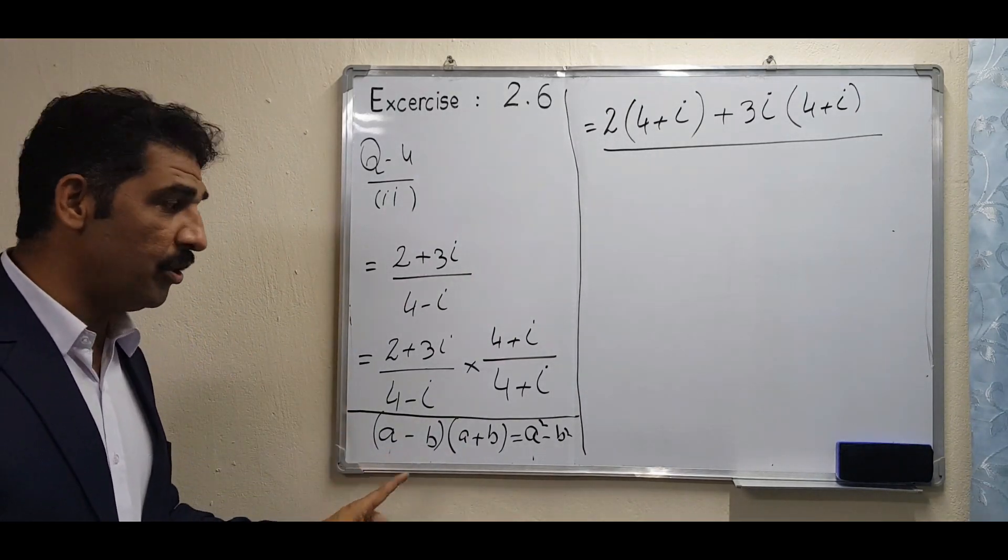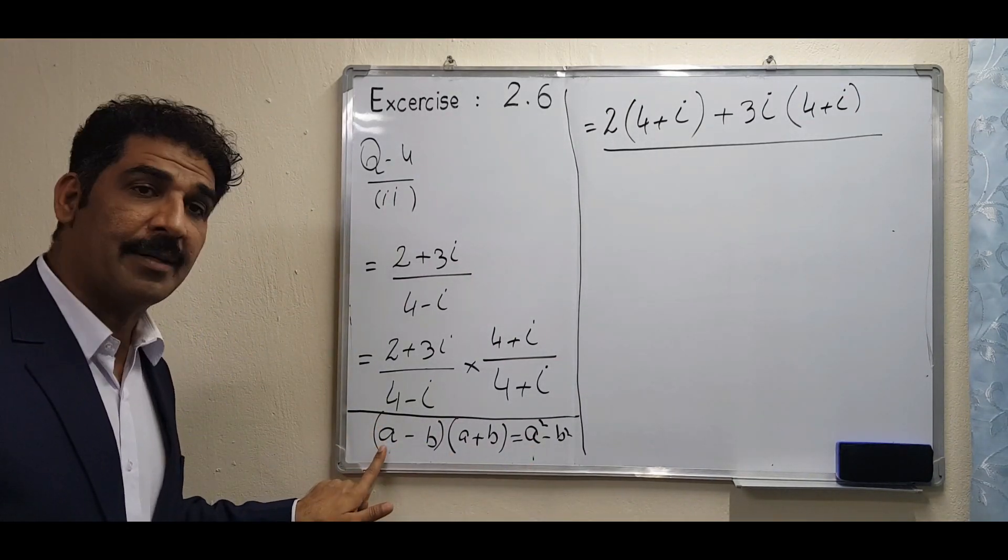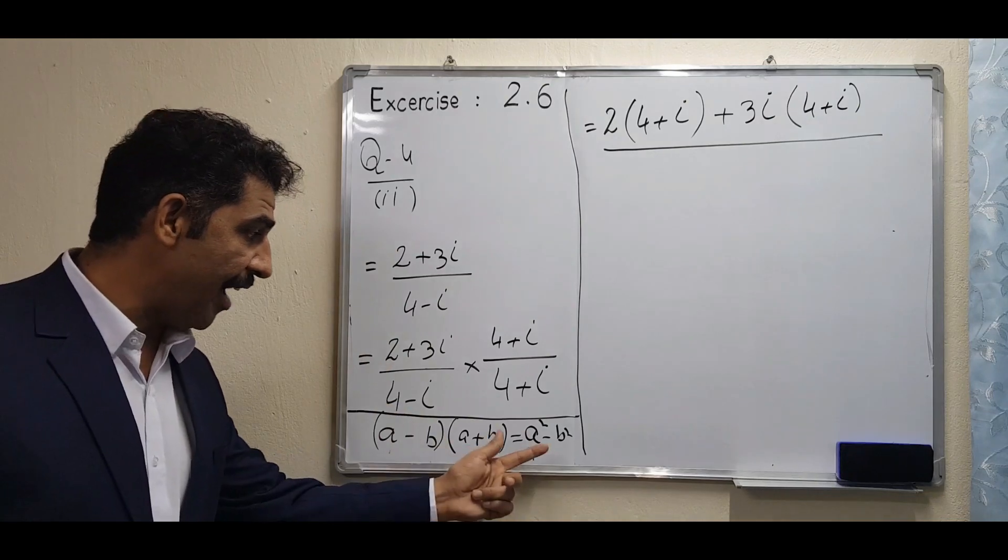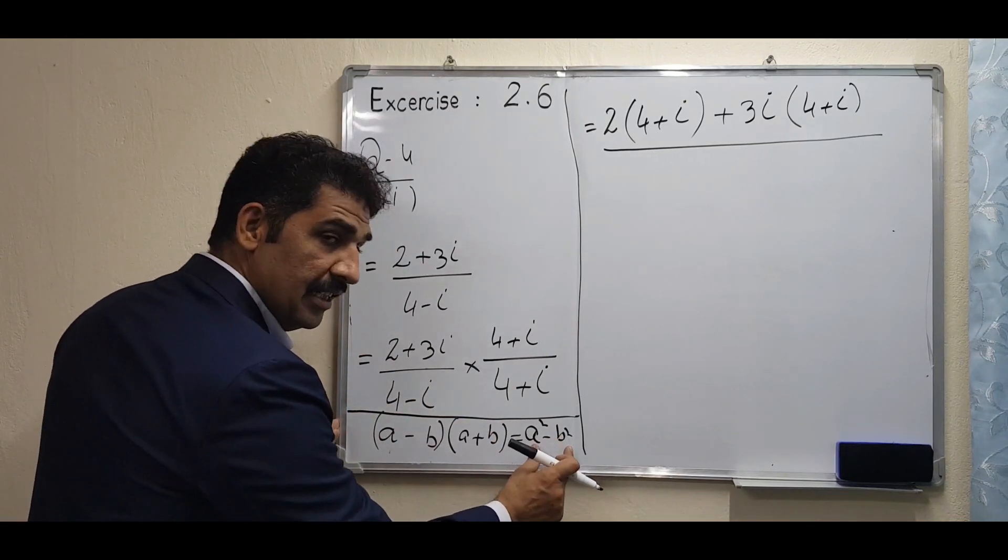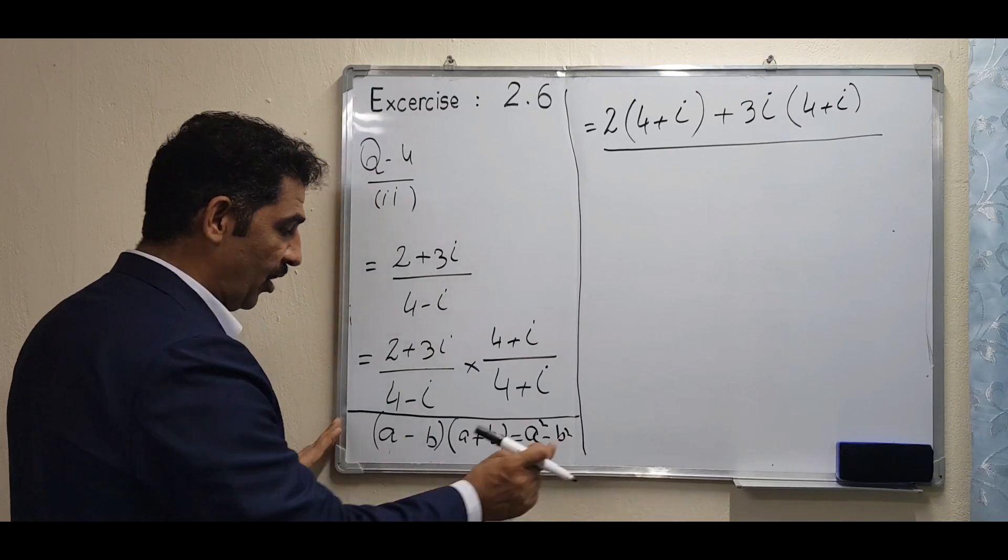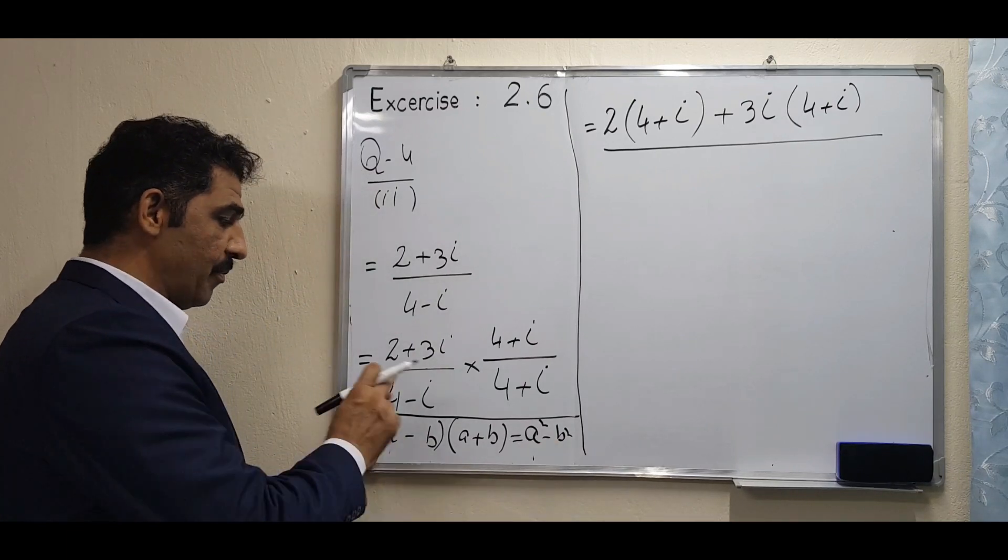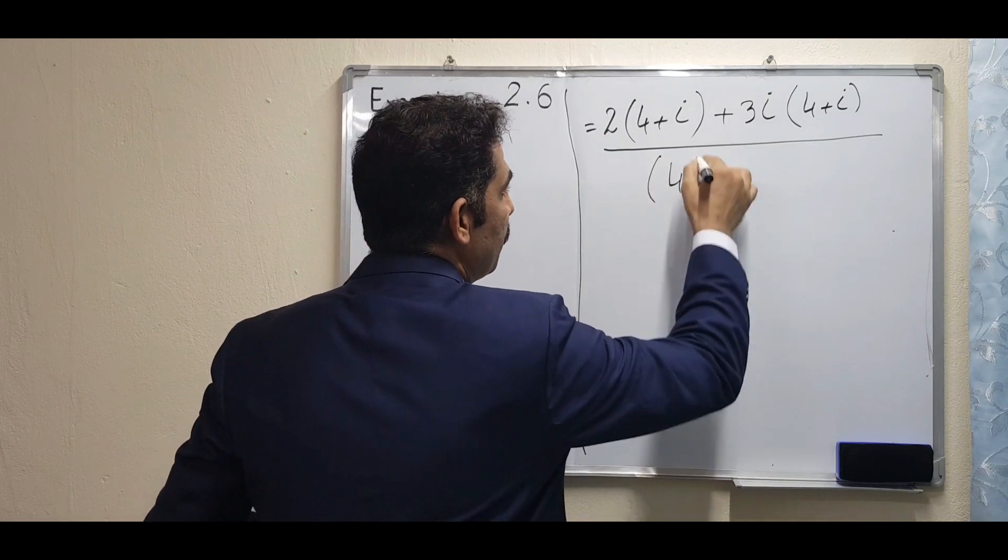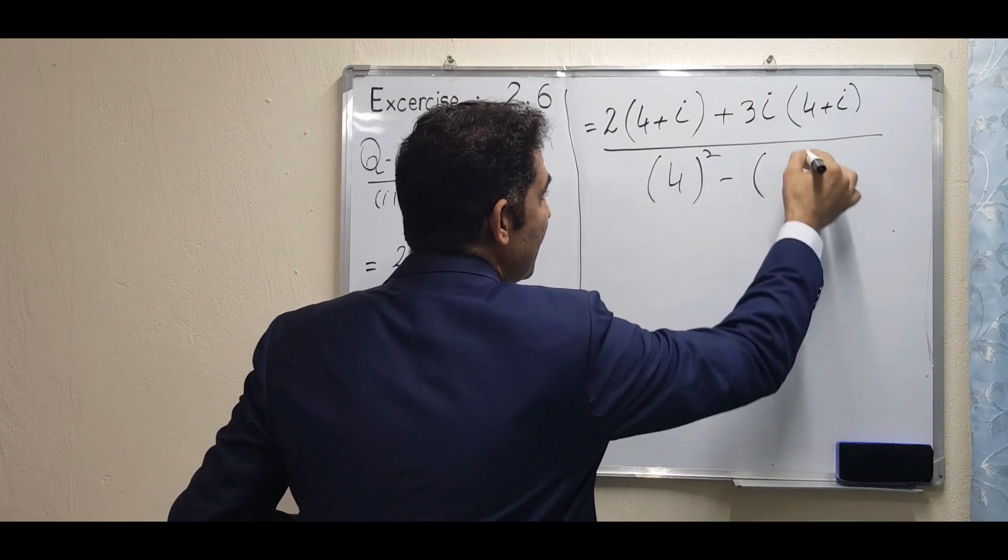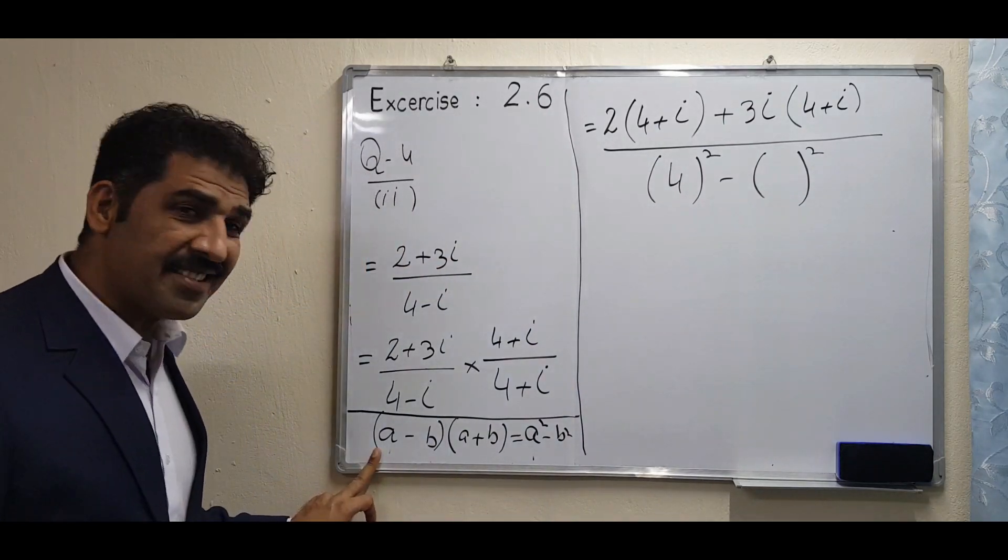According to this formula, the first term is called a. We have to write this question in this form: a² - b². The first term is 4, so we write the first term squared minus second term squared.